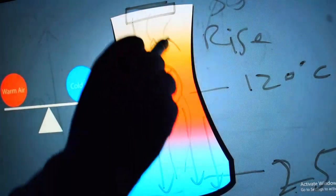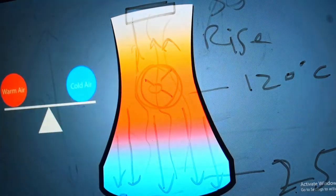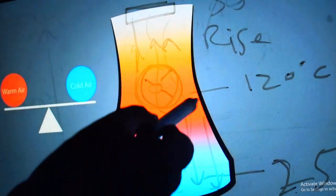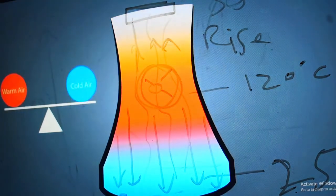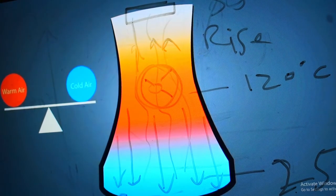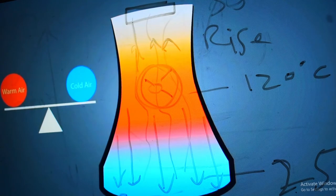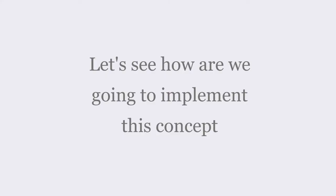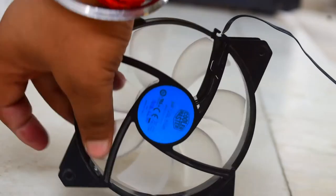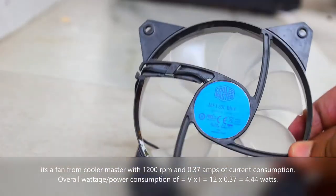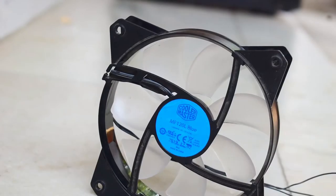There is a temperature difference inside the CPU cabinet because of the heat liberated by all the electronic components, and as a result this fan is pulling the air out. This is how we are making the CPU cabinet even more thermally effective — improving the overall thermal effectiveness of the CPU cabinet using a fan from Cooler Master.